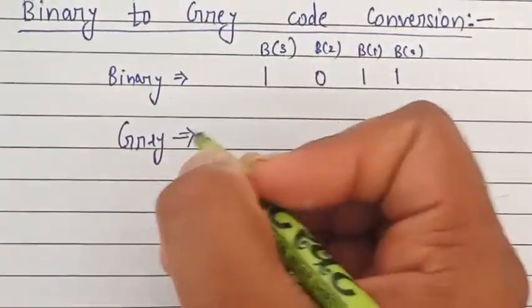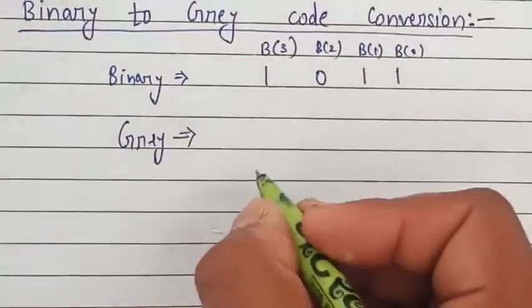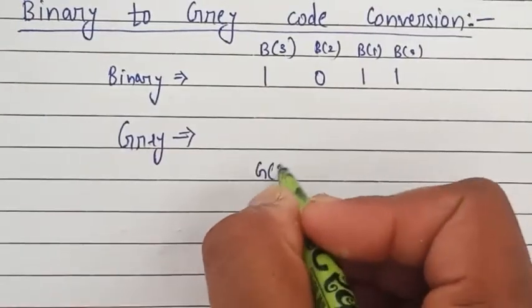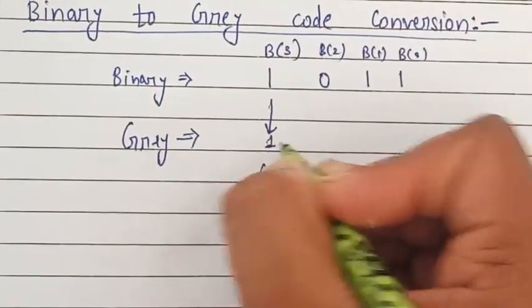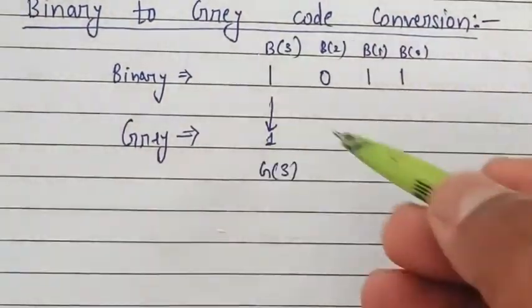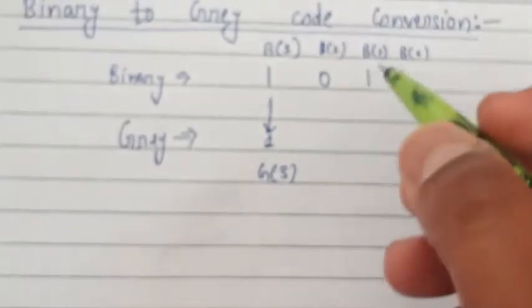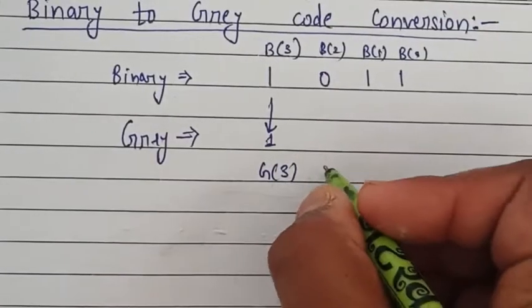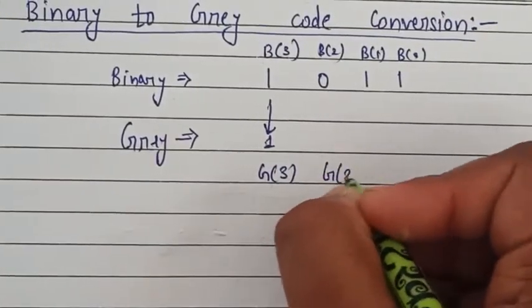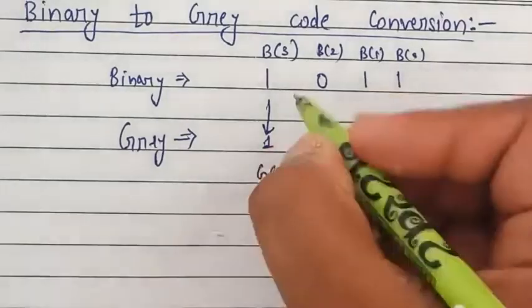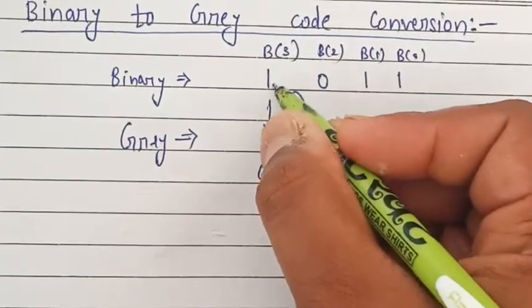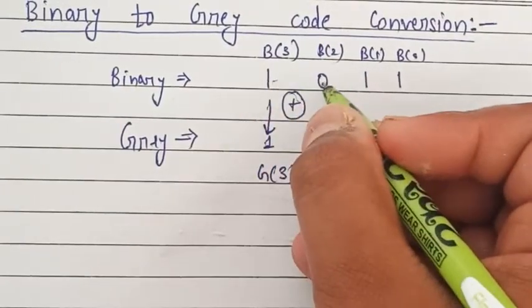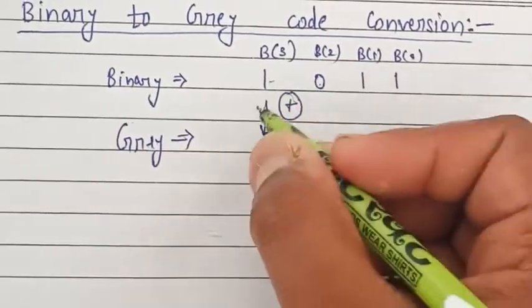For the first value, that is g3, the same value of b3 from binary will appear in your gray code. For g2, you have to do XOR of b3 and b2.